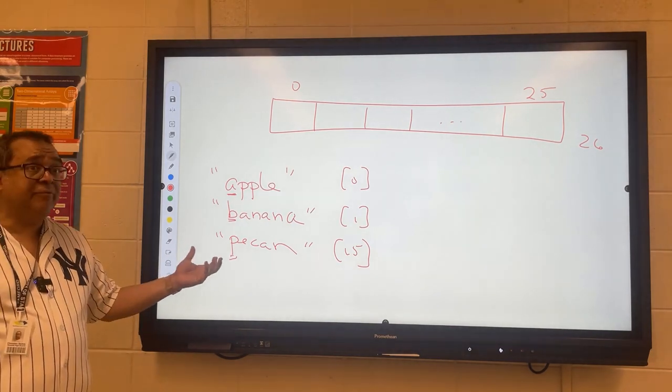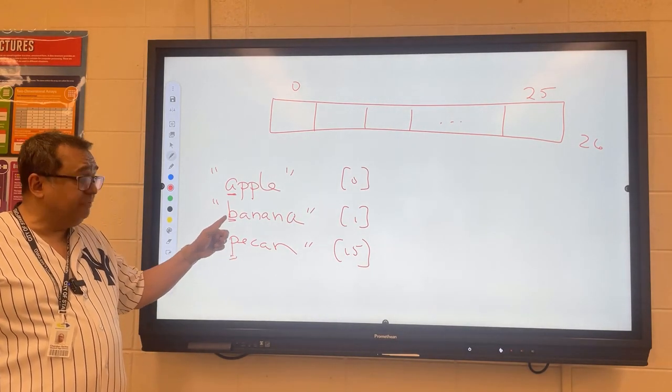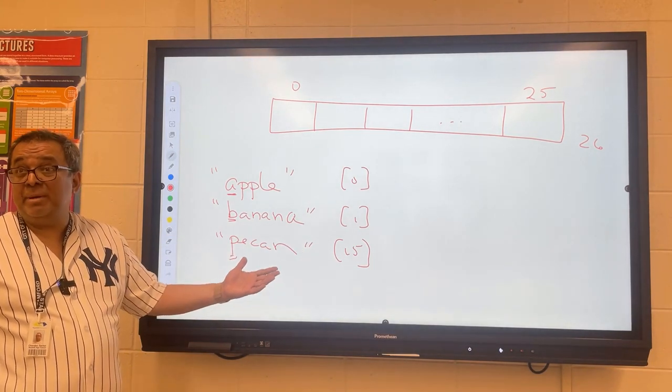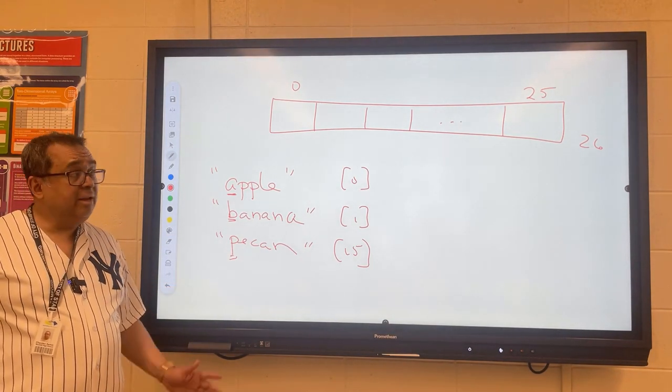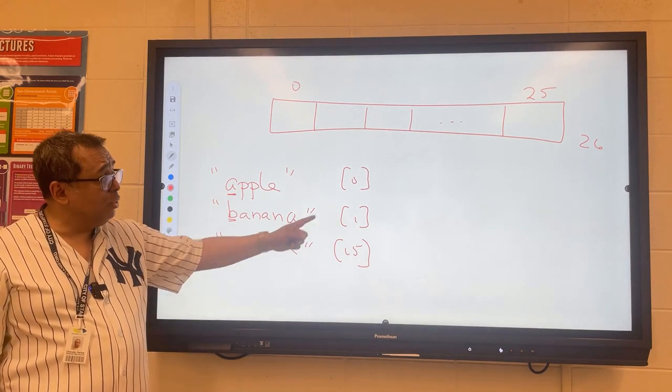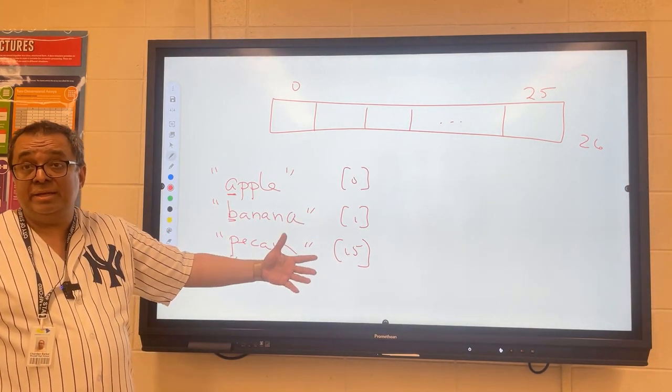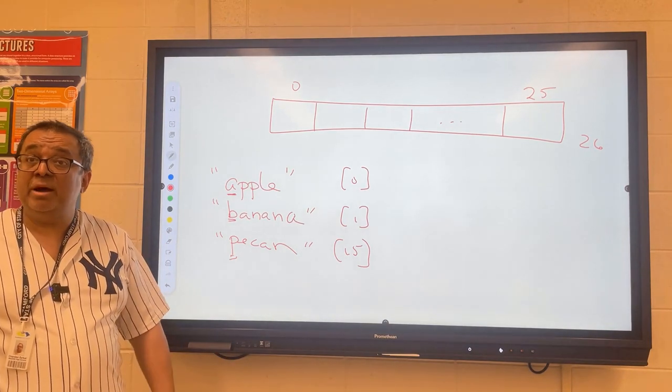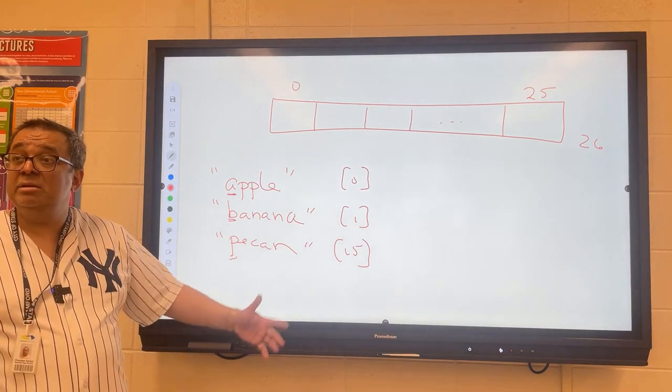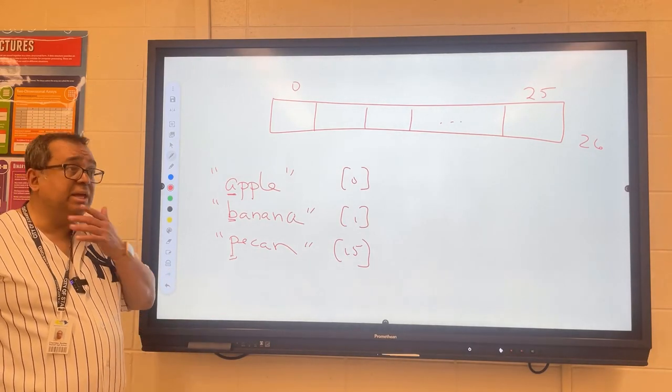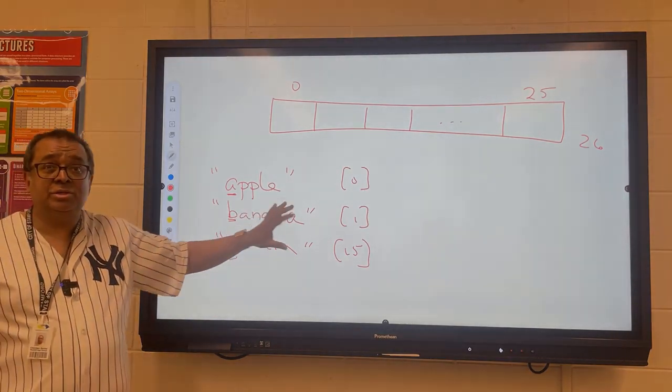It'll take some time to translate the first letter into a number, but it's a fixed amount of time. Then we just take the number and store it at that location. Since the array provides random access, it's O(k) for storage. What about for retrieval? To find it, also O(k). We do the same thing, so you can see that the operations would all turn into O(k).